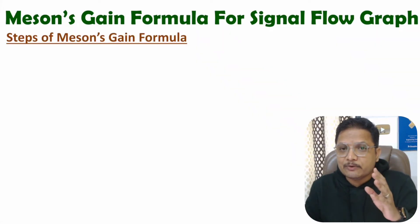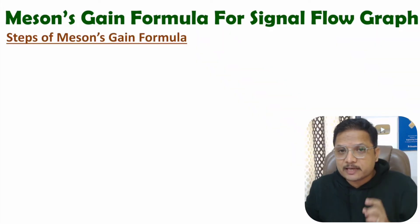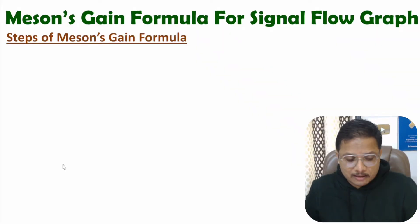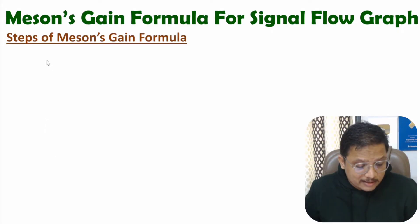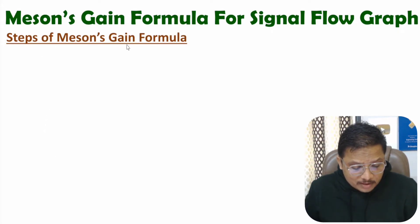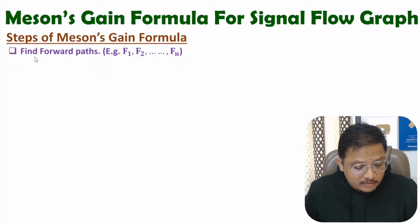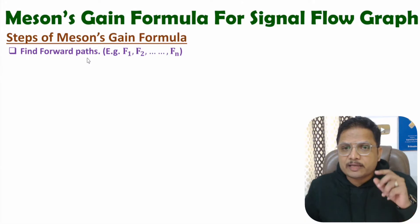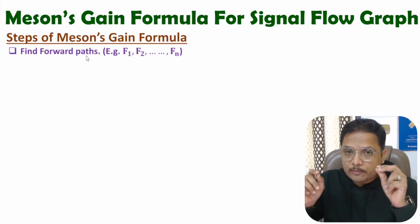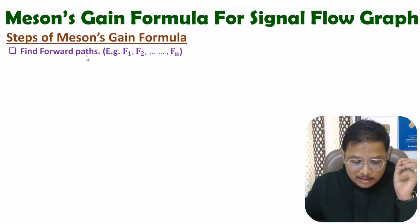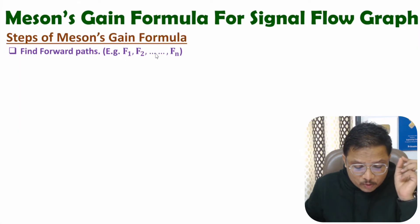First of all, I'll explain Mason's gain formula, so you need to understand the steps. In Mason's gain formula, first of all we need to identify forward paths — paths from input to output. Let us name them as F1, F2, and so on.